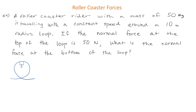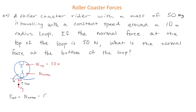We are told the normal force at the top of the loop is 50 newtons, and we want to find the normal force at the bottom of the loop. Let's start by drawing a free body diagram for the rider at the bottom. Our F_net equation is: F_net = N - F_g.